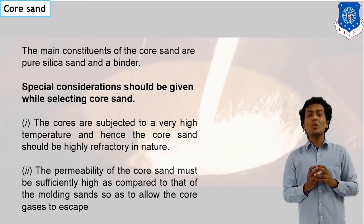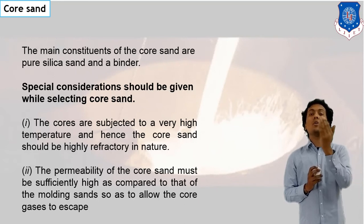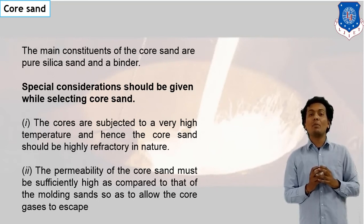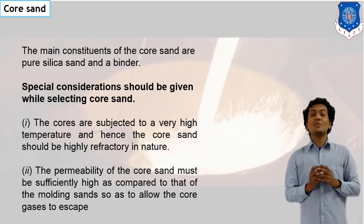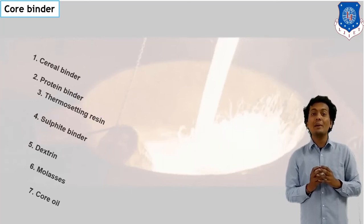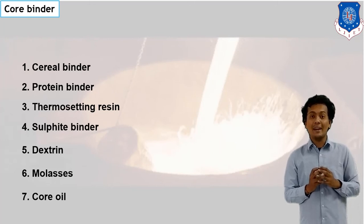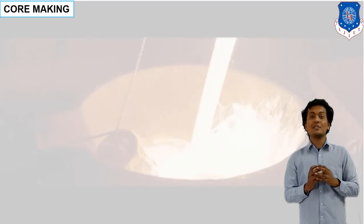Now let's discuss core sand — the sand used in making of a core. The purpose of a core is to make a hollow part in a casting product. For example, if you are making a hollow cylinder, that hole is made with help of a core. A core is essentially a sand cylinder placed where metal should not be present. This core sand should be used with a binder — a binding agent added to the sand. Core binders bind two sand particles together.